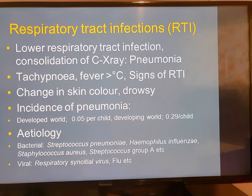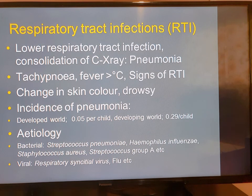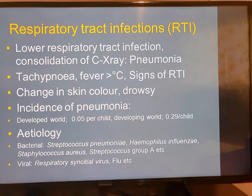The incidence of pneumonia is more common in the developing world compared to the developed world. The most common bacterial causative agent is Streptococcus pneumoniae, followed by Haemophilus influenzae. We also see pneumonia cases due to Staphylococcus aureus or Streptococcus Group A. Viral causes are very important in the winter months.